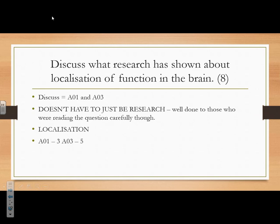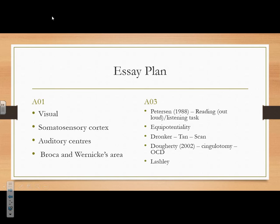Discuss what research has shown about localisation and functioning. Well done for not mixing up localisation and lateralisation — localisation means different areas of the brain have different roles, whereas lateralisation is about the two hemispheres. If it says research, it doesn't mean research only — you can talk about anything you know to do with localisation, including theories. AO1 was 3 and AO3 was 5, so a little description and lots of evaluation. 'Discuss' means both describe and evaluate — if you're still not describing and evaluating when you see that word, please do not do that in the exam; you will lose lots of marks.